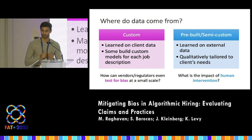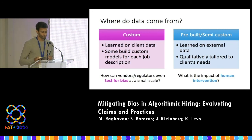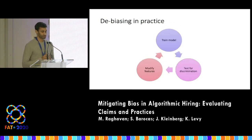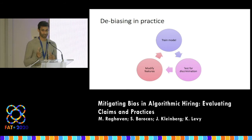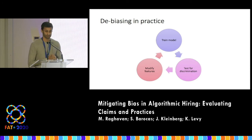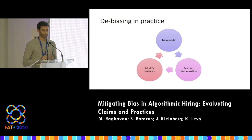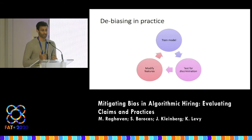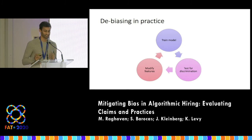The final thing I'll get into is what many of these vendors refer to as de-biasing. A lot of them are engaging with this community, saying they know machine learning and AI has potential for bias — but they've fixed it. The standard operating procedure we found across multiple vendors is: train your model, test for discrimination, and then based on the results, if it fails your tests, you modify the features — maybe toss them out of your dataset — and retrain the model.